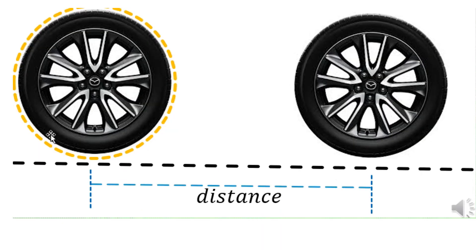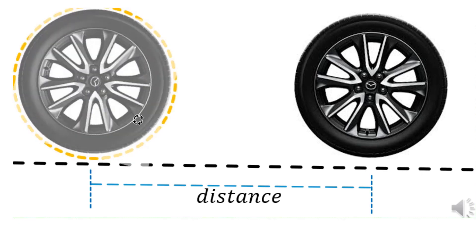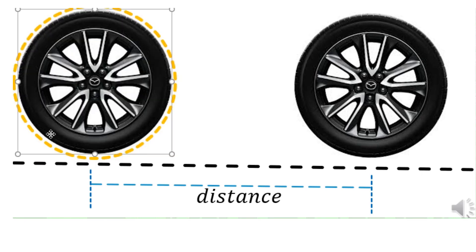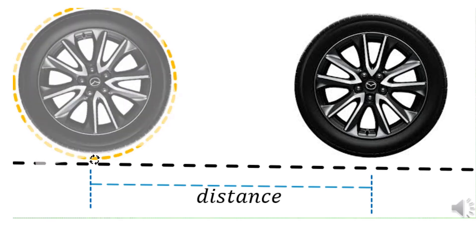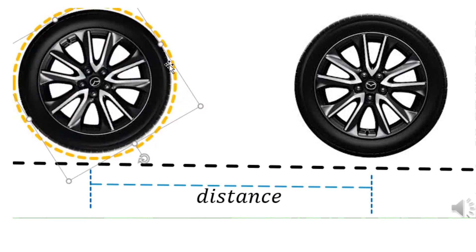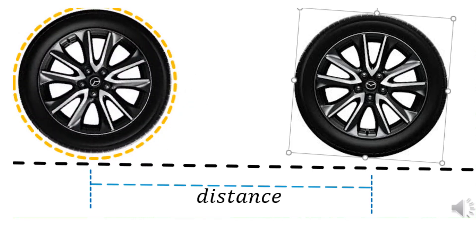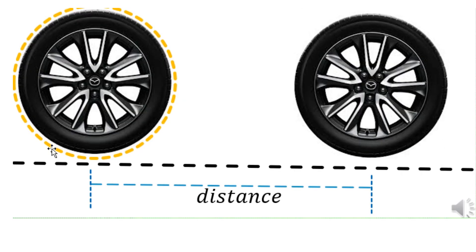Now look at this. It makes sense when we rotate the object, because we observe that the rotation gives us a particular distance, and the number of revolutions will also allow us to determine distance in relationship to the circumference of this particular wheel or any circular object.